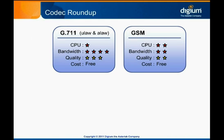GSM is very popular with Asterisk because it offers a balance between audio quality and bandwidth, and is available for use at no charge. Its quality is slightly less than G.711, but many people can't distinguish the two, and GSM uses only 13 kilobits of bandwidth instead of G.711's 64 kilobits. It's relatively easy to transcode to or from GSM.